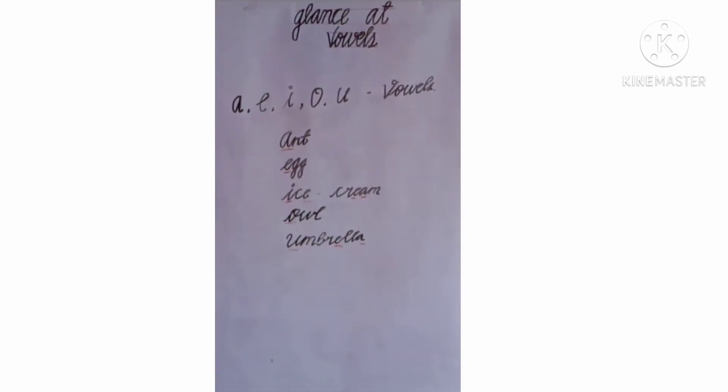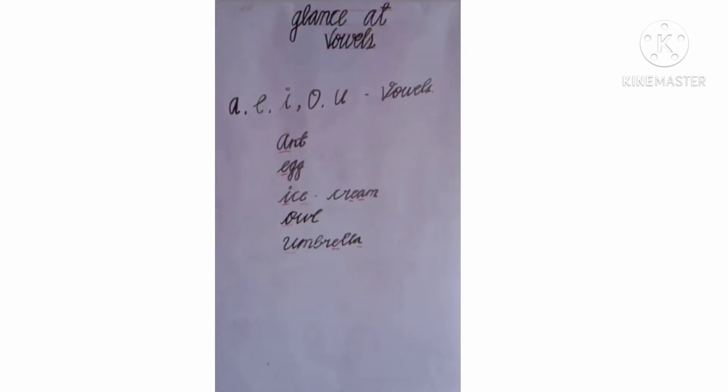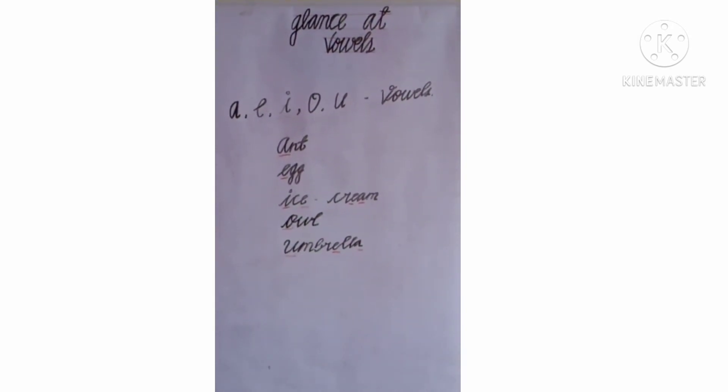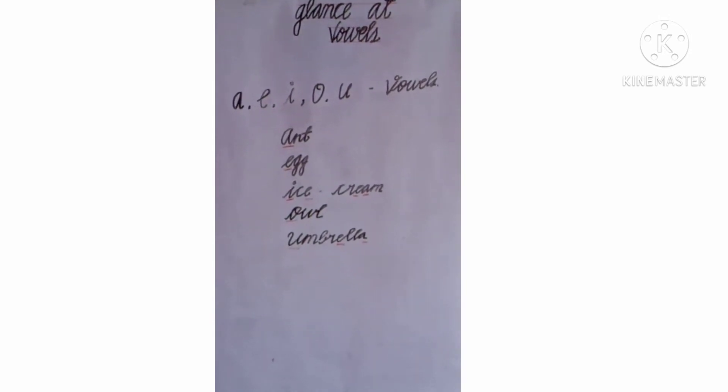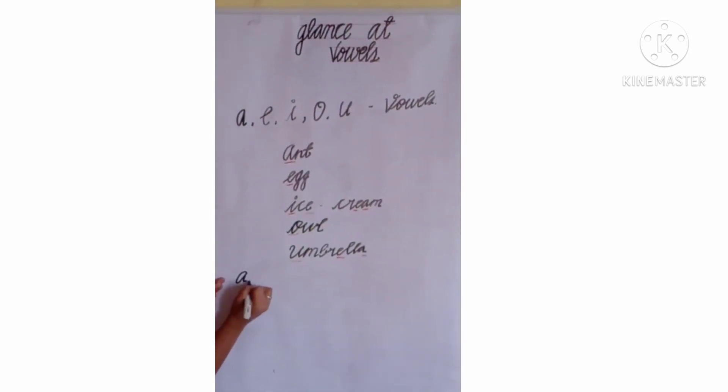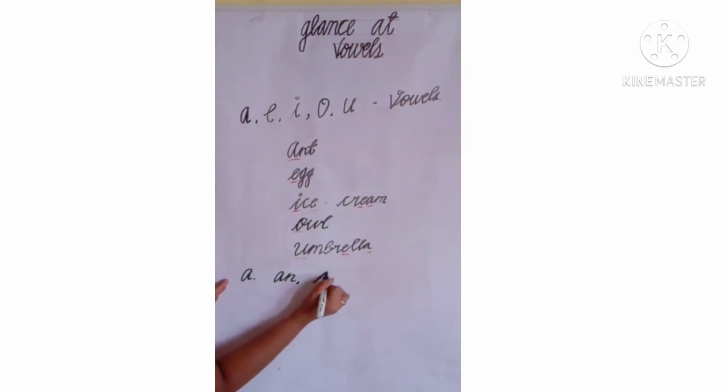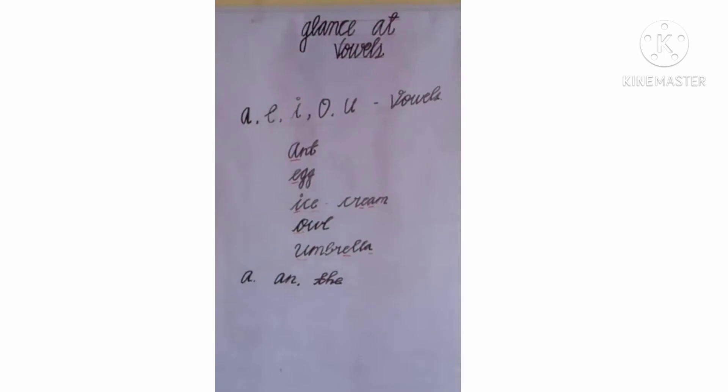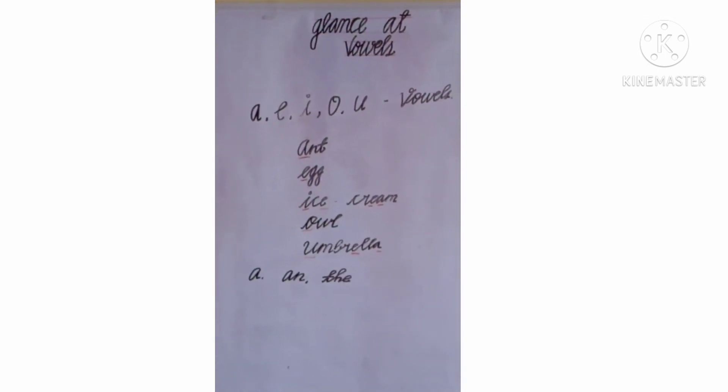Now, I think it will be clear. Now, we'll see which article will suit for the vowel letter. Article is nothing but we have three articles. A, an, the. These three are considered as articles and these articles are used in many words.